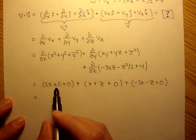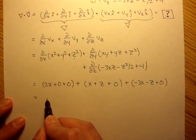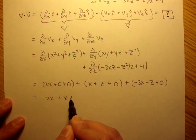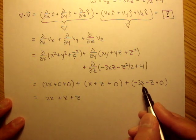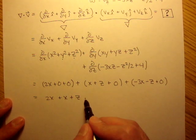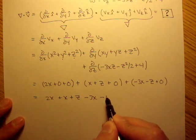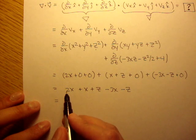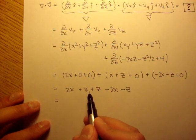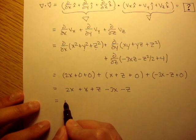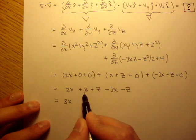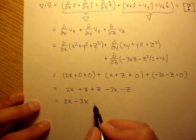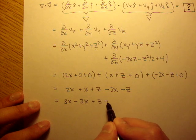Let's simplify this a little bit more here. Here, we just have 2x. Here, we have plus x plus z. And here, we have negative 3x minus z. So let's collect all the like terms. We have 2x here, we have x here, and we have negative 3x. So 3x here minus 3x, and then z here and a z here. So plus z minus z.